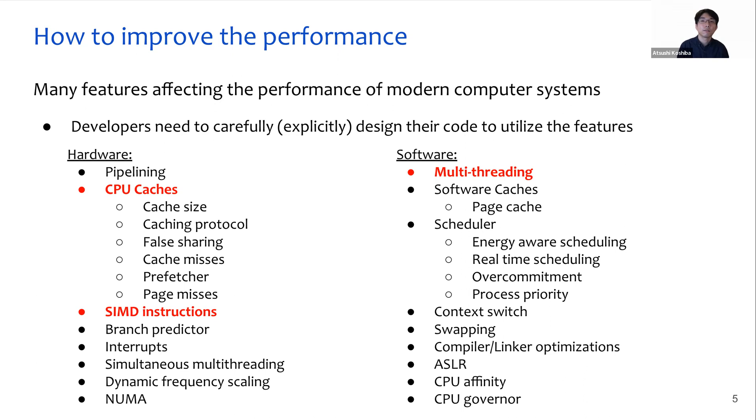There are many factors that affect performance in modern computer systems. These features are likely to be optimized or utilized implicitly by the compiler and operating systems, such as task scheduling policies, page caches, and so on. However, such implicit optimization can still not be enough in some cases. So developers need to carefully and explicitly design their code to utilize the features and improve performance as much as possible. In this lecture, I'd like to focus on three features: CPU cache, SIMD instructions, and multi-threading.